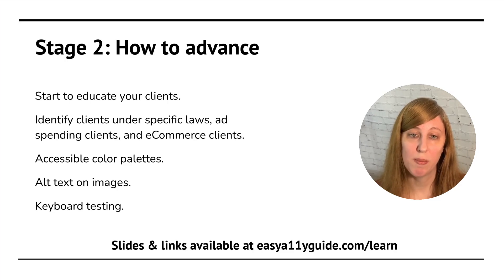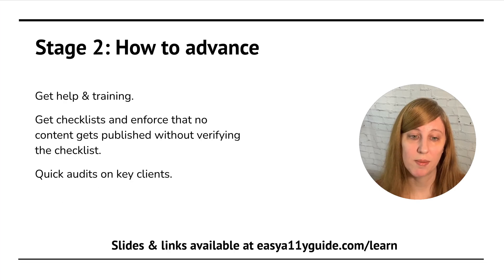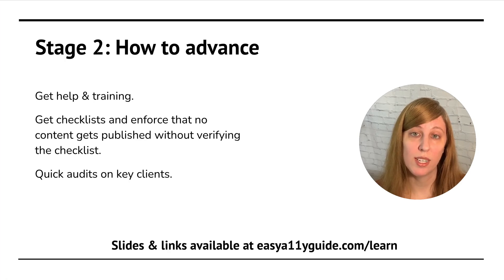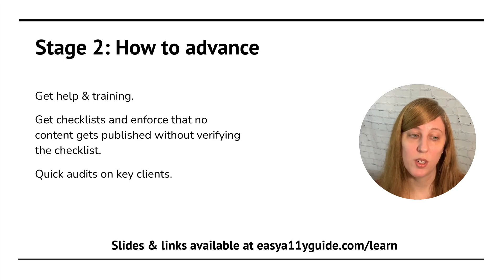You'll start to create accessible color palettes for your clients, so that you have those ready to go on new content for the website, email marketing, and social media. You'll be making sure to include alt text on your images, and you'll be learning about keyboard testing. You'll also be getting help and training from your accessibility partner, building out your checklists, and enforcing that no content goes out to the public unless it has gone through the checklist and been verified. You'll be performing quick audits on your key clients, especially those identified as ADA Title II, e-commerce, and those with marketing ad spend.